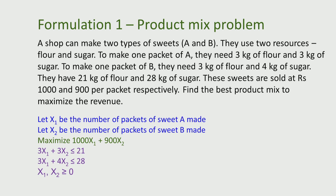By making and selling these sweets, the revenue generated is rupees 1000 per packet for A and 900 per packet of B. So if we make X1 packets of A, the revenue generated is 1000 times X1, and if we make X2 packets of sweet B, the revenue generated is 900 times X2. Therefore, the total revenue generated is 1000 X1 plus 900 X2. We want to maximize the revenue and therefore we wish to maximize the function 1000 X1 plus 900 X2.